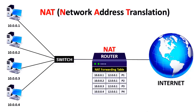Do you know one interesting fact about NAT? For the internet, all devices in your private network look like one single device. This is because the public network only knows the single public IP address of your network, not the private IP addresses of all the devices. Like this, NAT helps you to hide the real IP address of your network from external users and acts as a firewall.